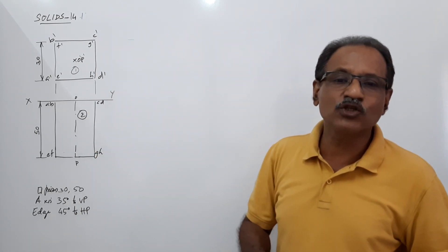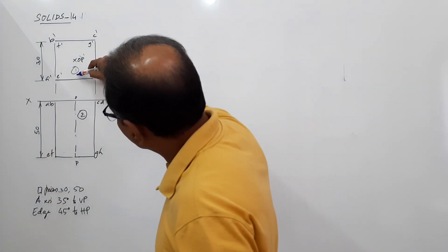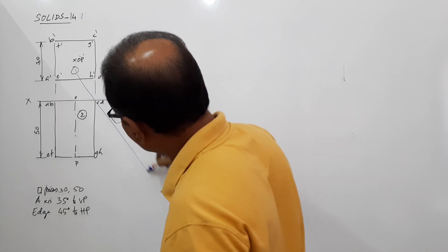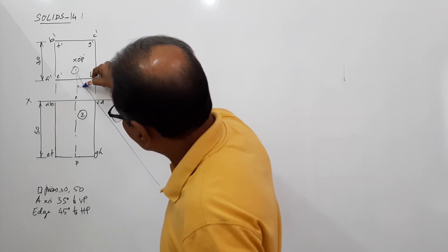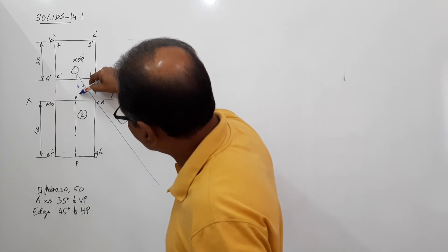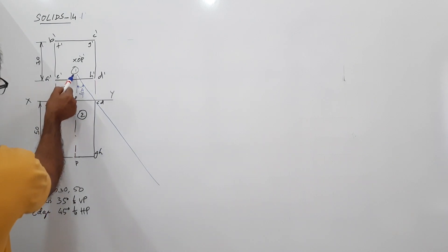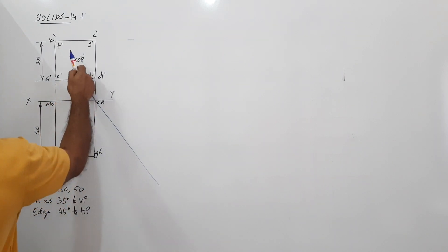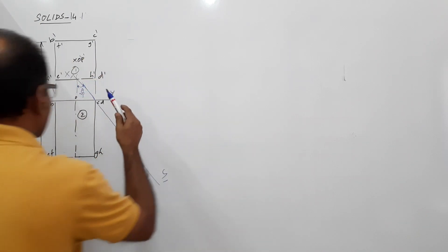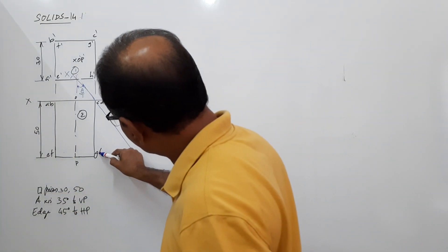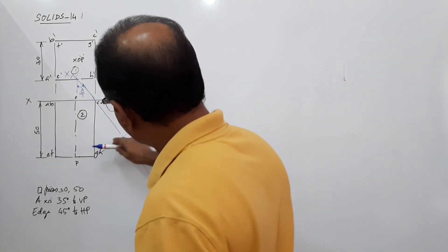The axis has to make 35 degrees to VP. What we do is draw an X1Y1 line through CD so that the angle between the axis and X1Y1 is 35 degrees. This is kept as the plan, and you will draw a new elevation over here. You have to project lines perpendicular to X1Y1.